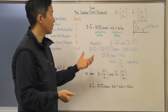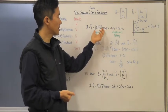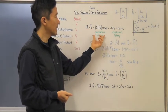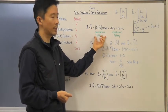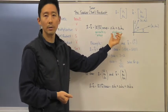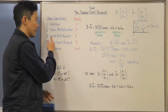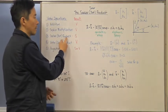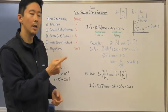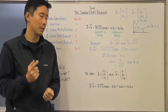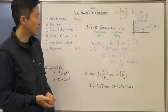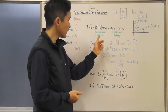Notice that both of these expressions — the geometric and algebraic interpretations — produce a number. That's why we said the scalar or dot product provides you with a scalar result. Keep that in mind.